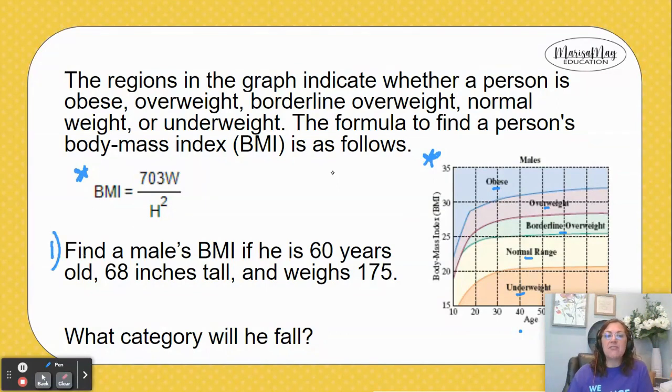What we want to do first is find a male's BMI if he's 60 years old, 68 inches tall, and weighs 175 pounds. The 68 inches is his height and his weight is 175—those are what we're going to substitute into the formula.